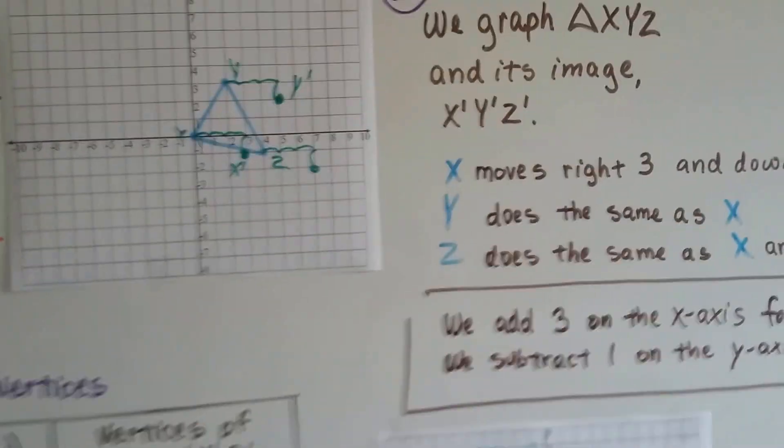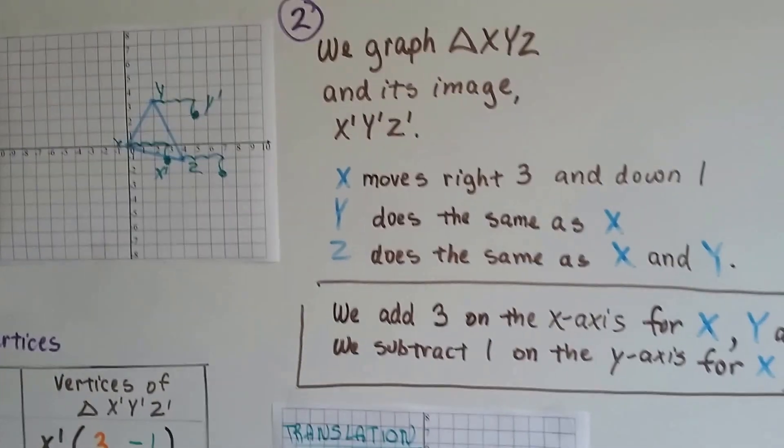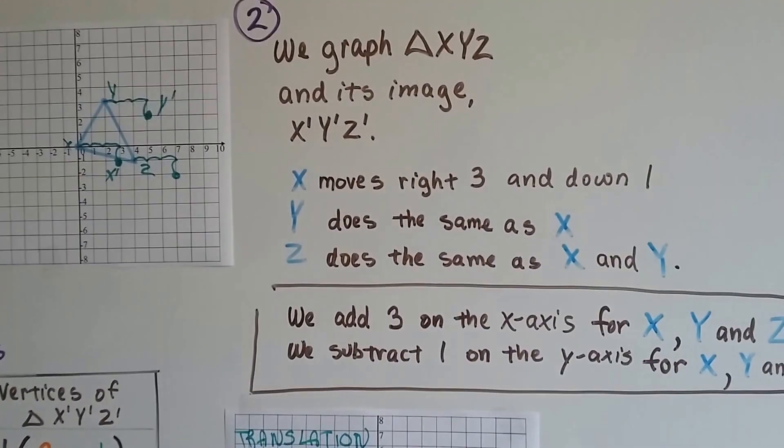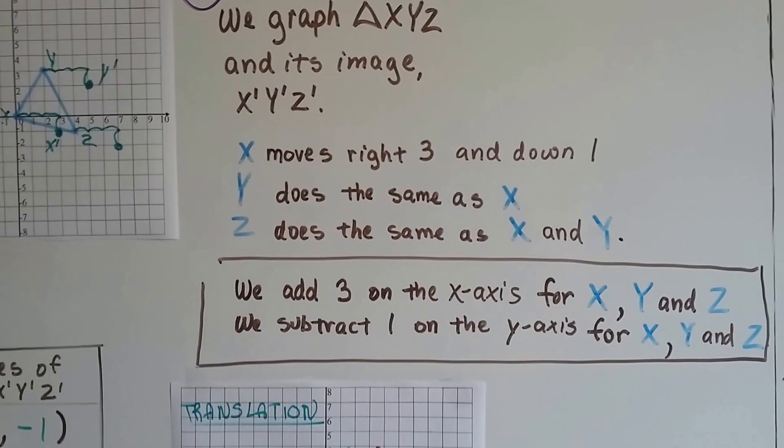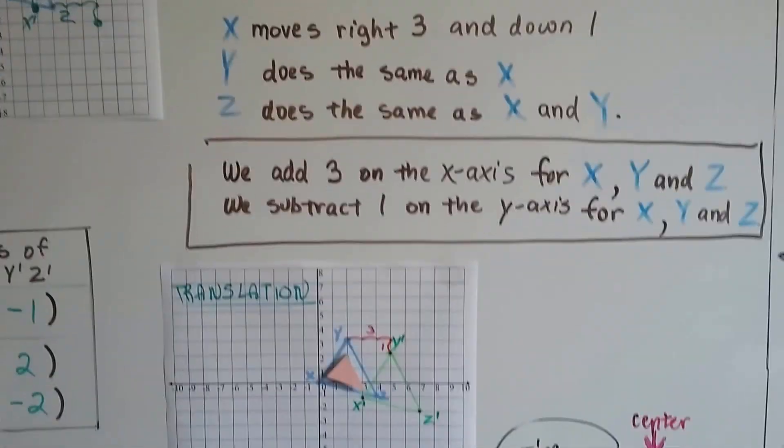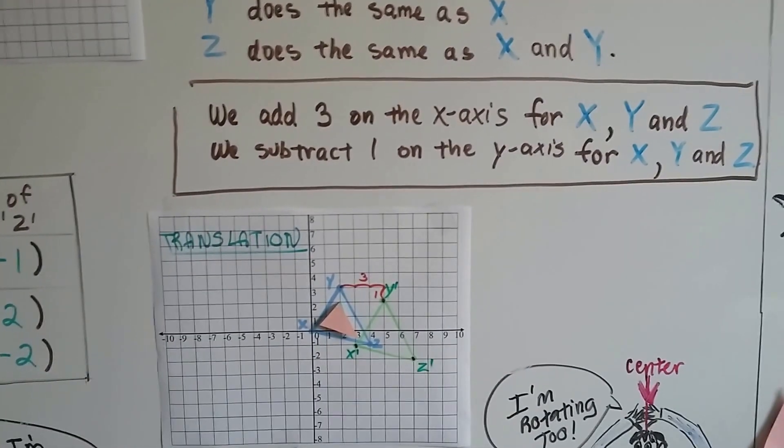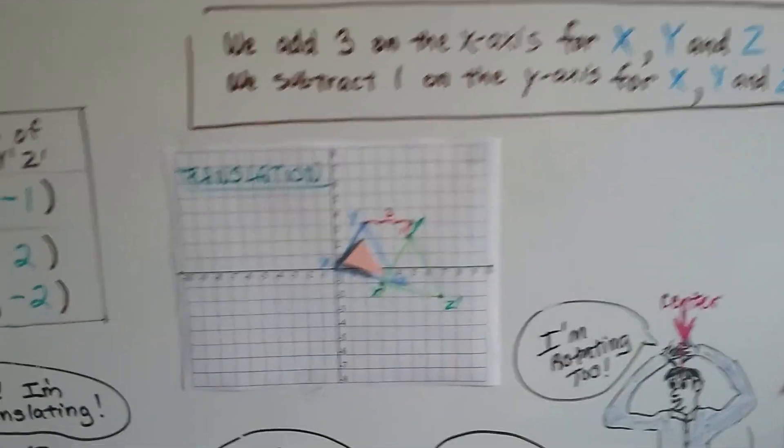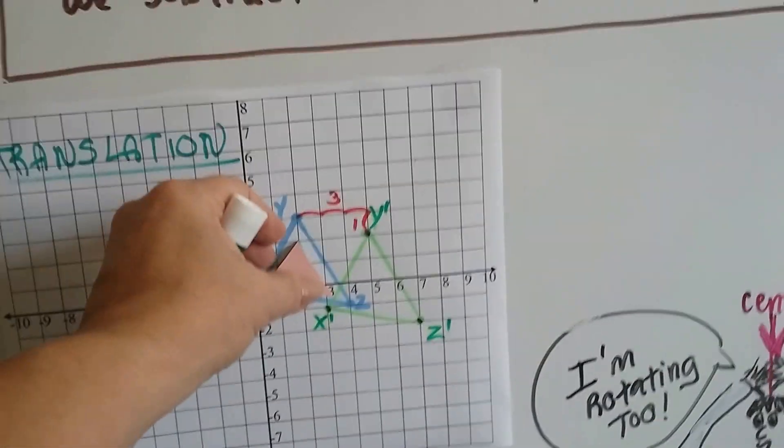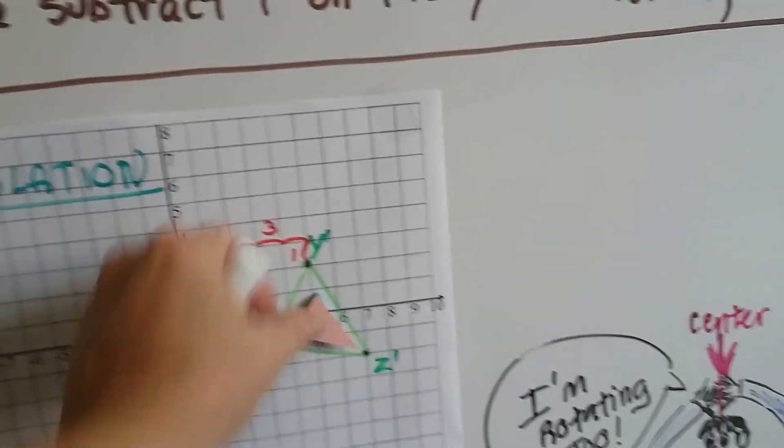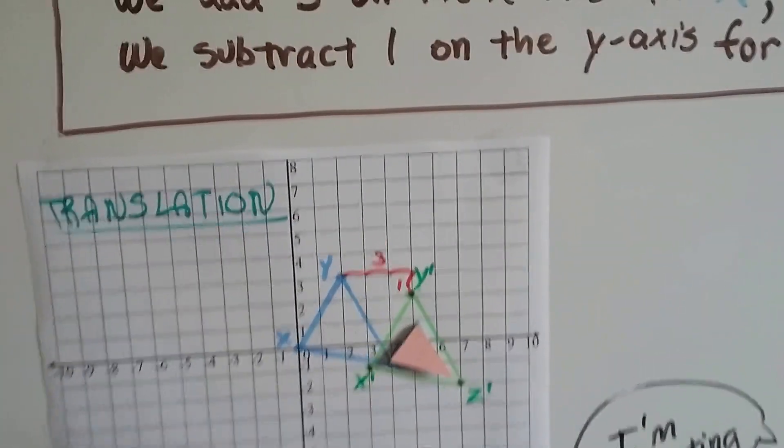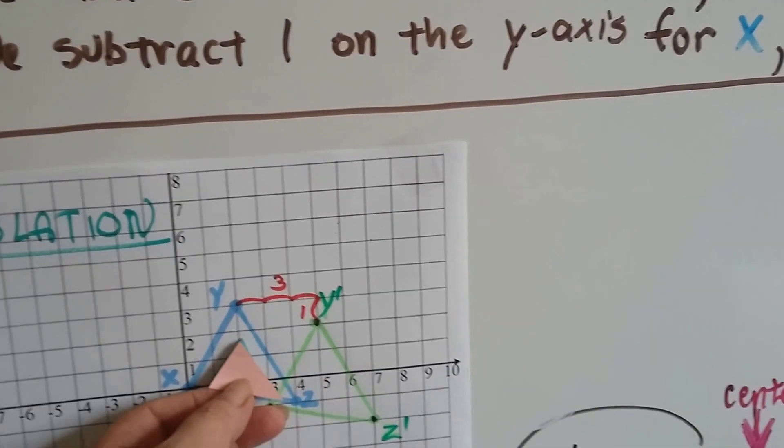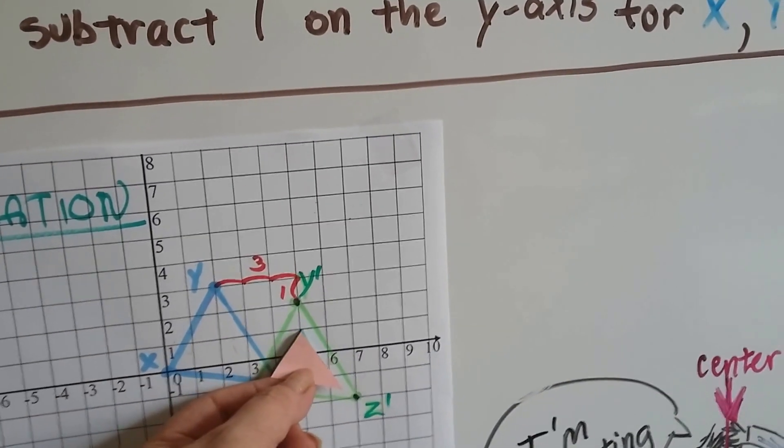So we graph X, Y, Z and its image, X prime, Y prime, Z prime. X moves right 3 and down 1, and Y does the same as X and Z does the same as X and Y. We add 3 on the X axis for X, Y, and Z, and we subtract 1 on the Y axis for X, Y, and Z. And our triangle goes from being here to being here. It just slid. We didn't rotate it. We didn't reflect it. We just slid it like an ice skater. It just slides right into place.